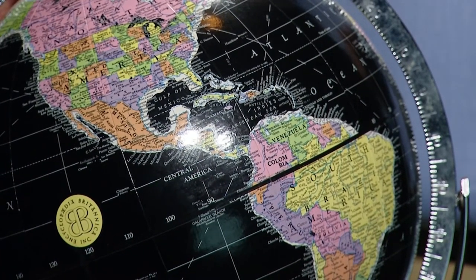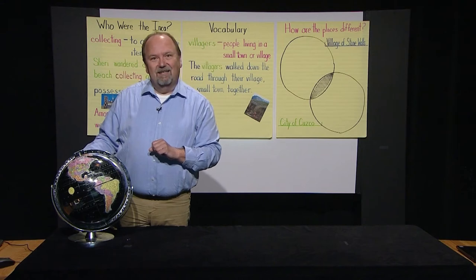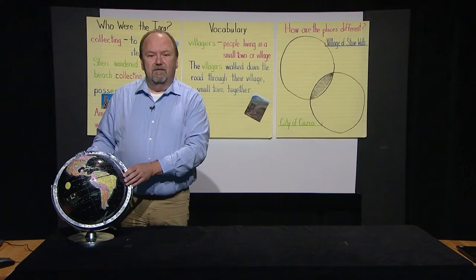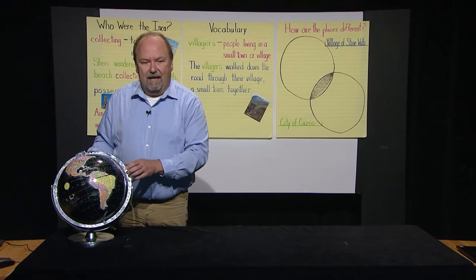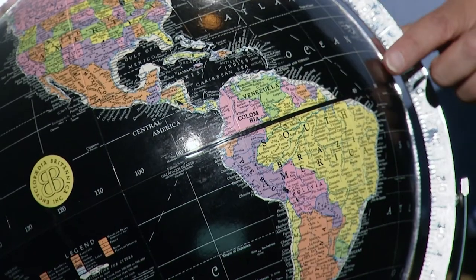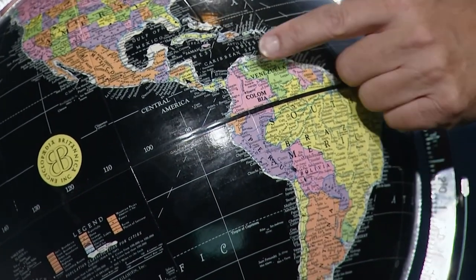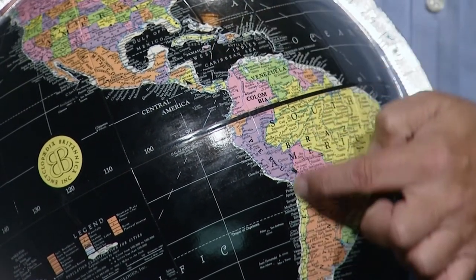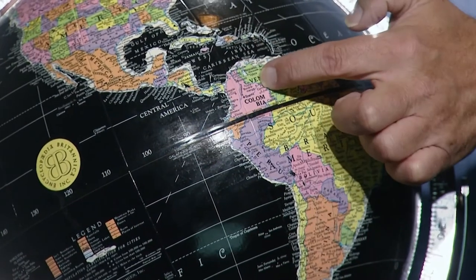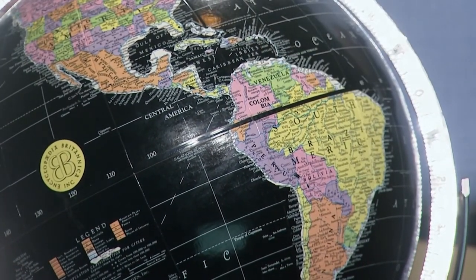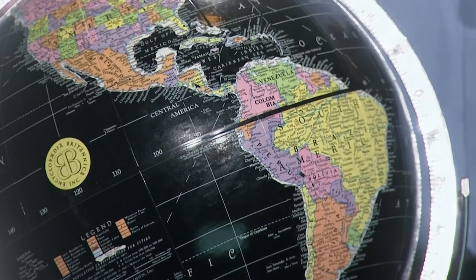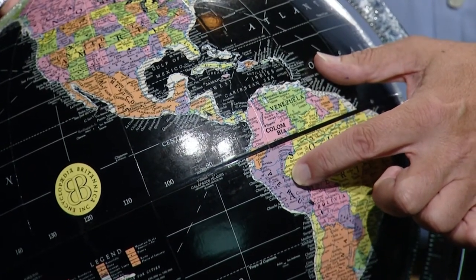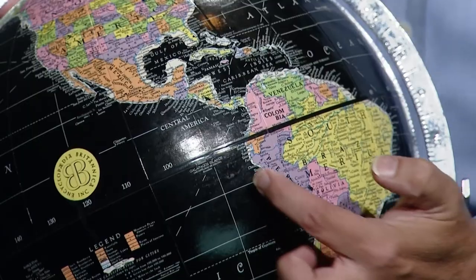Today, we'll be learning about a third civilization, the Inca civilization. It developed in South America. The Inca ruled over the lands that stretched along the Andes Mountains and the Pacific Ocean. That is the present-day countries of Bolivia, Ecuador, Argentina, Chile, and Peru. Today's story will take place in the area that is now called Peru — this area here, along the ocean and in the mountains.